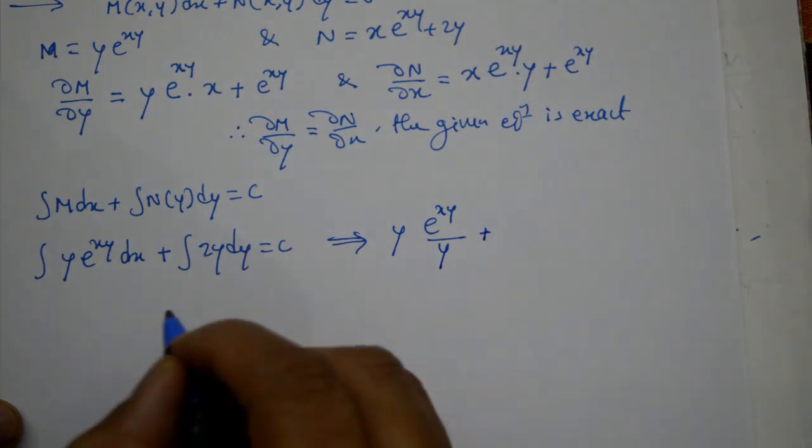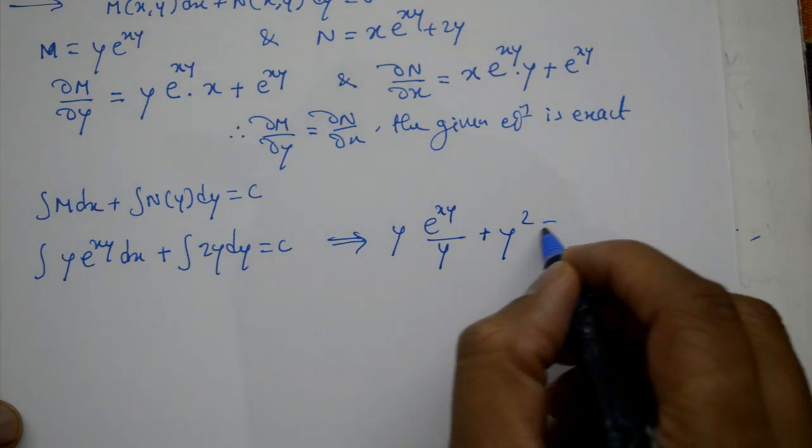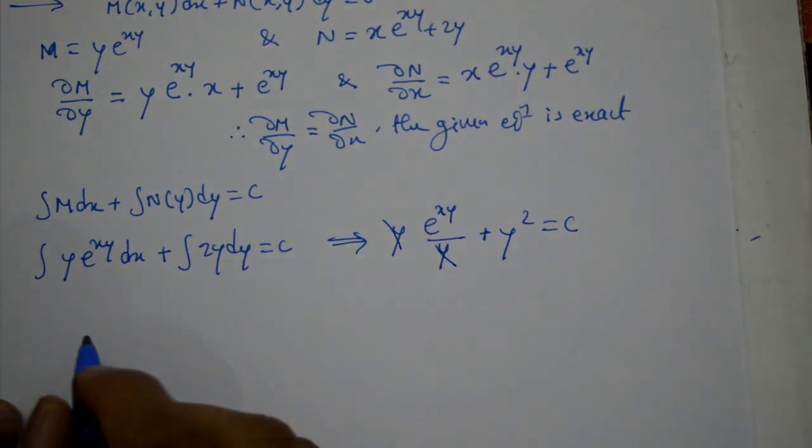Plus 2 is there, integration of y with respect to y is y square by 2, 2 cancels, y square is equal to c. Then y y cancel.